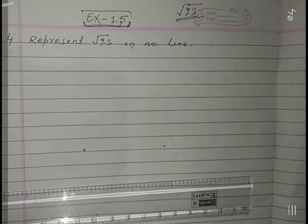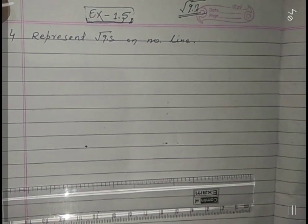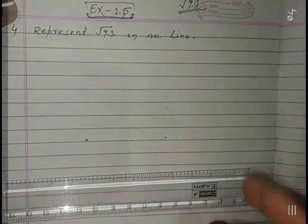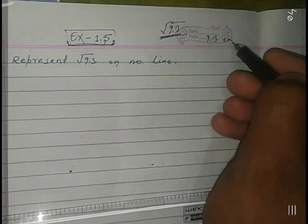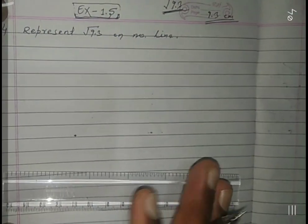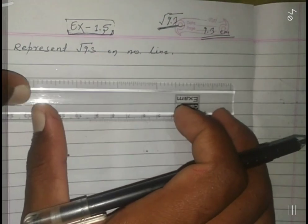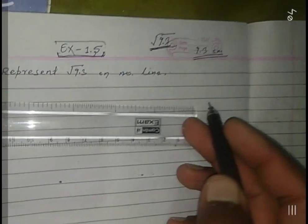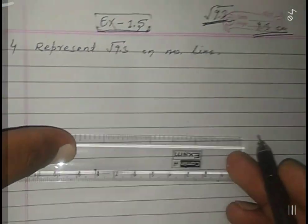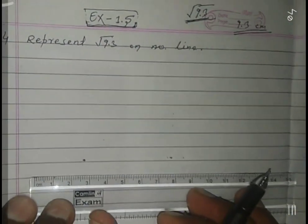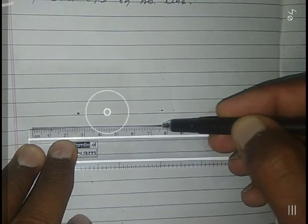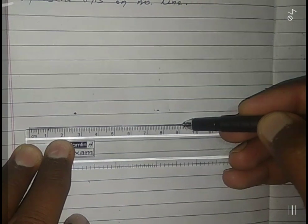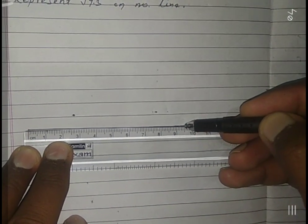To represent this, first of all we have to take a line segment which is exactly 9.3 centimeters. So I am taking exactly 9.3 centimeters length, a line segment here: 0, 1, 2, 3, 4, 5, 6, 7, 8, 9.1, 2, and 3. Let this name be AB, which is exactly 9.3 centimeters.